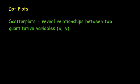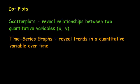And they tell us something about a relationship if there is one between x and y. The time series graphs reveal trends in a quantitative variable over time. So our x-axis is time and then y is our quantitative variable. We're looking to see is this increasing over time, decreasing over time, what's happening over time.